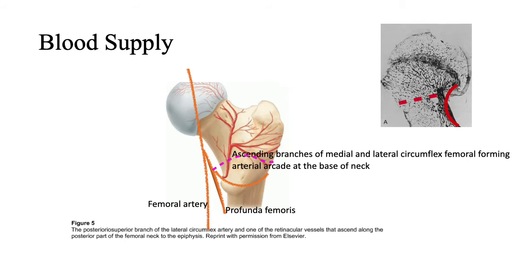Therefore in chronic cases you have to remove a trapezoid-shaped portion of the neck — called a trapezoid osteotomy — and then reduce the head and fix it, retaining it with a trans-growth-plate pin so that the blood supply to the physis is maintained.